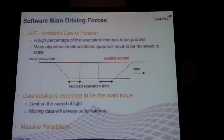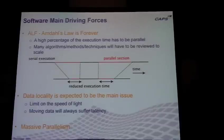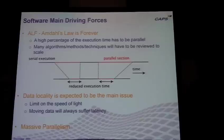If we look at the basic rules for software — the driving forces — the first thing is Amdahl's law. Of course it's obvious, but if the main execution part of your code is not parallel, then you can't take advantage of manycore. In many cases, this is the first bottleneck: the hotspots that are parallel are too small, representing a very tiny part of the application. In this case, it's very difficult and the algorithm has to be reviewed.